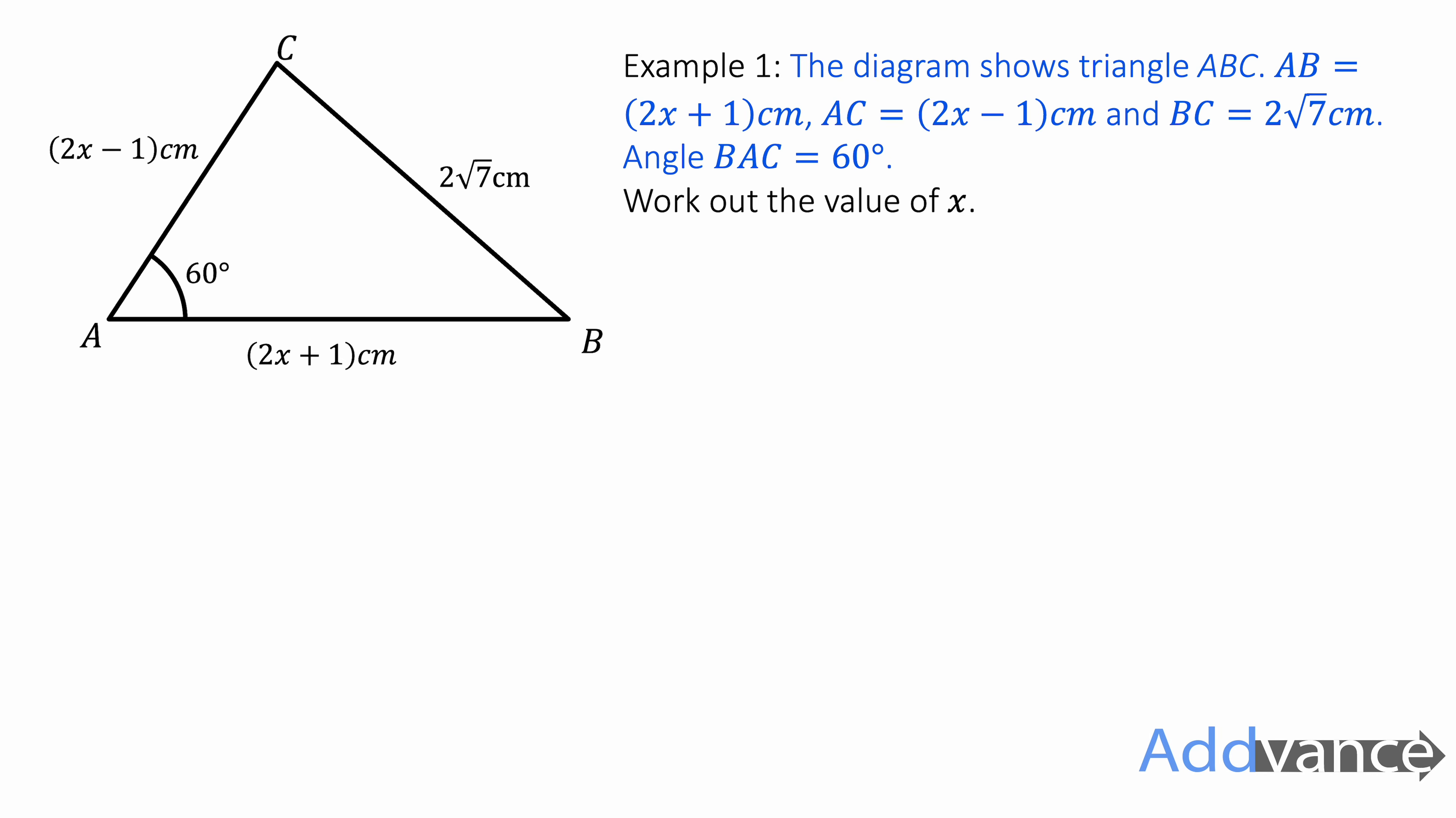Example 1. The diagram shows triangle ABC where AB is 2x plus 1, AC is 2x minus 1, and BC is 2 root 7. Angle BAC is 60 degrees. Work out the value of x.